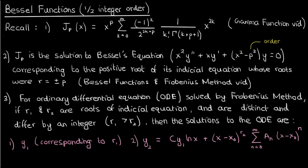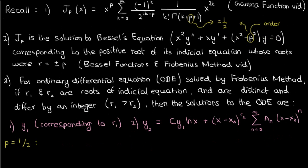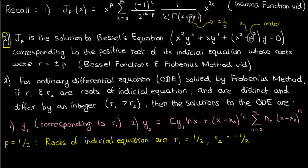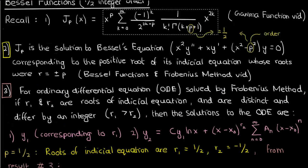Now let's start deriving the equation for Bessel functions of half integer order, meaning p equals 1 over 2. If p is 1 over 2 and I start solving Bessel's ODE, then I know that the roots of the indicial equation will be 1 over 2 and negative 1 over 2 from result number 2. These roots clearly differ by an integer — in fact their difference is 1. So using result number 3, I can write down the first solution to Bessel's equation as just J_{1/2}(x).